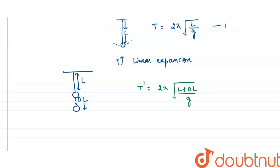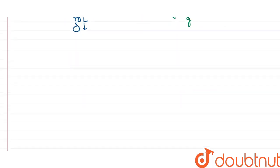Call equation one the original time period and equation two the new time period. The linear expansion equation gives: l_final = l(1 + α·Δθ), where we use theta for temperature since t is used for time period. We will substitute this into the formula.